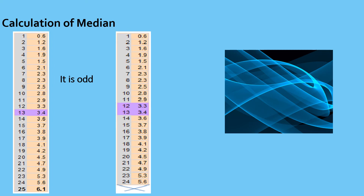If we have an even number of terms, there will be two middle terms and we take the average of those two. So in this case, 3.3 plus 3.4 divided by 2, which is 3.35, will be the median.